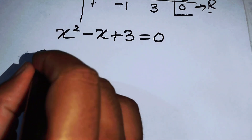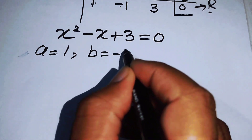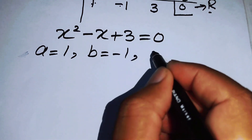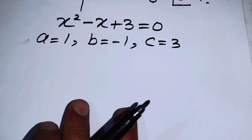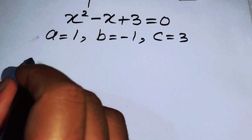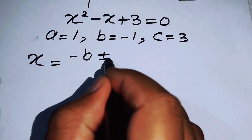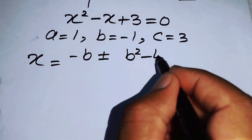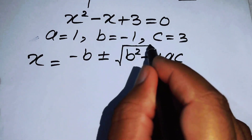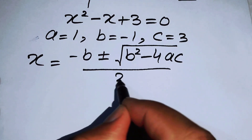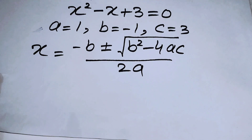Here we have a equals 1, b equals minus 1, and c equals 3. The quadratic formula is x equals minus b plus or minus the square root of b squared minus 4ac, all over 2a. Now we substitute all the values of a, b, and c.